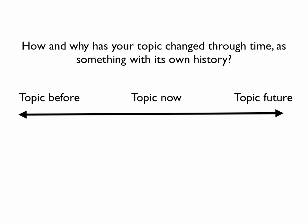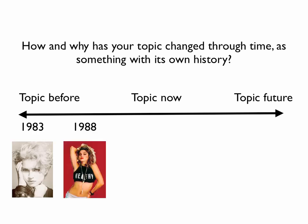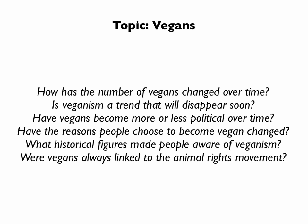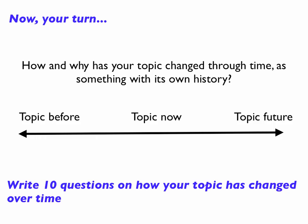Next, think about how and why your topic has changed through time — treat it as something with its own history. Think about the past, the present, and the future of your topic. For example, if we look at Madonna over time, you can see how she has changed dramatically. Now think about that for your own topic and write questions about how your topic has changed over time. You can also use this as an opportunity to make predictions about where your topic will go in the future.